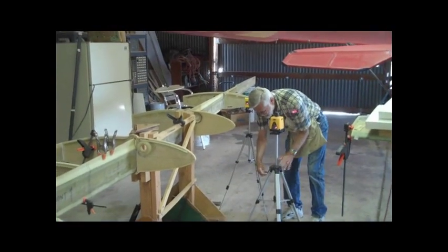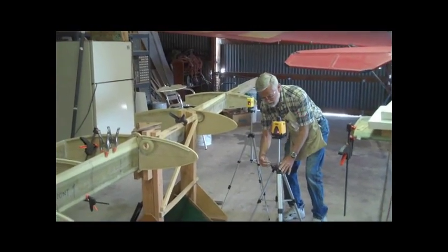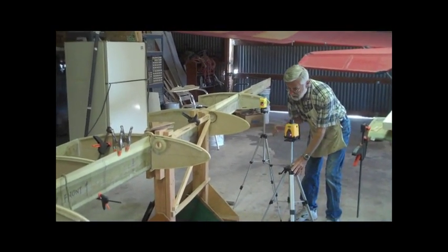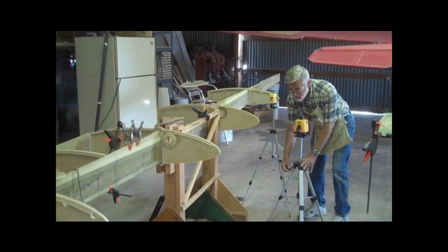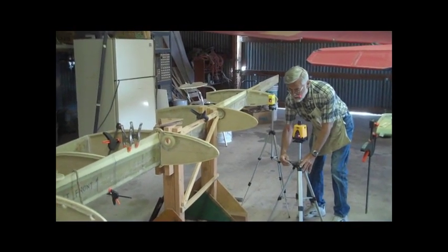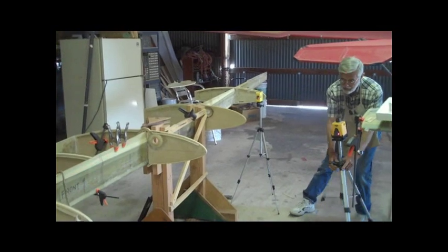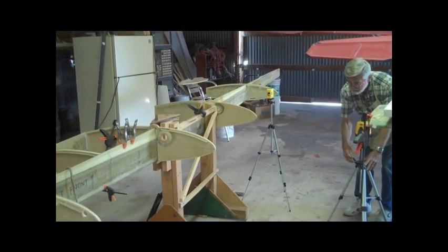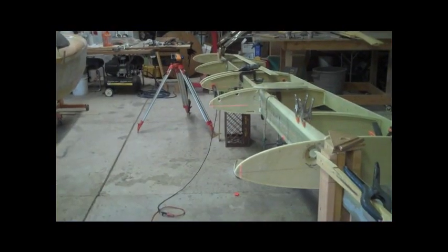So Bob has got two laser levels here. One, he's going to paint all of the level lines on the ribs. And the second paints the vertical line that is located one inch from the leading edge of each rib. Here he's dialing them in.